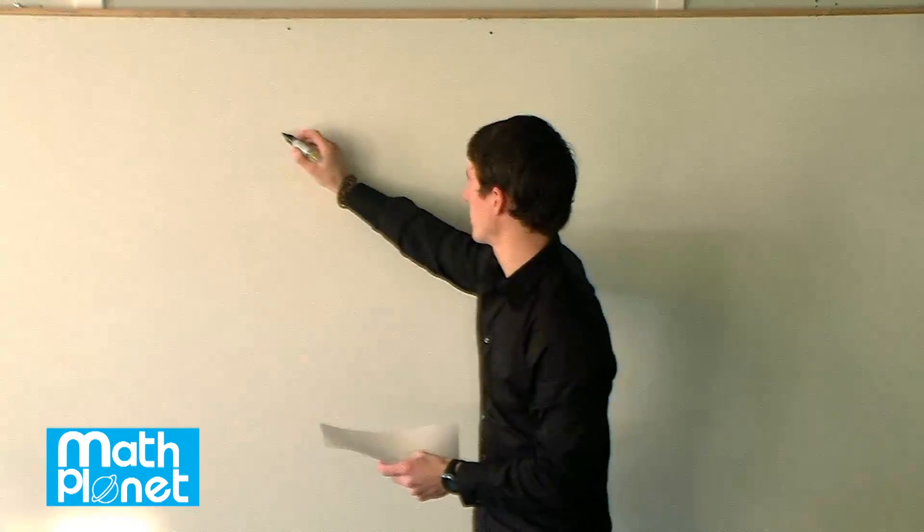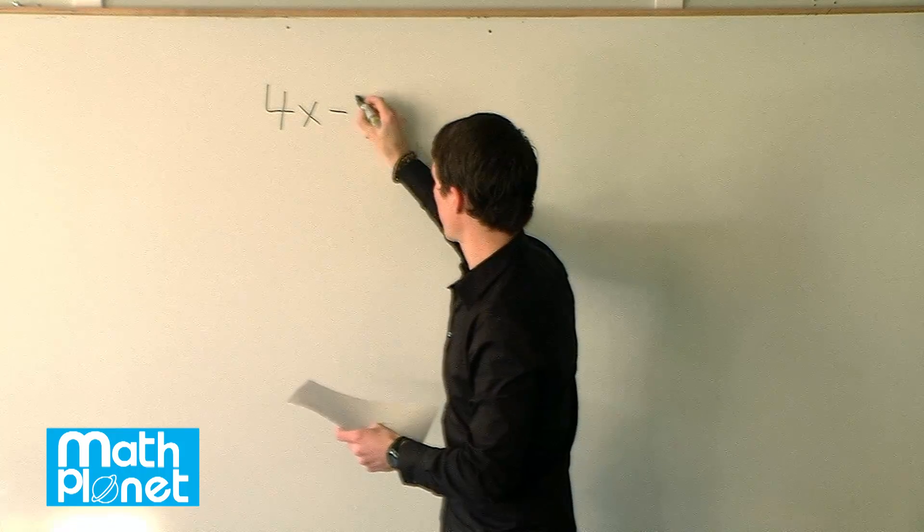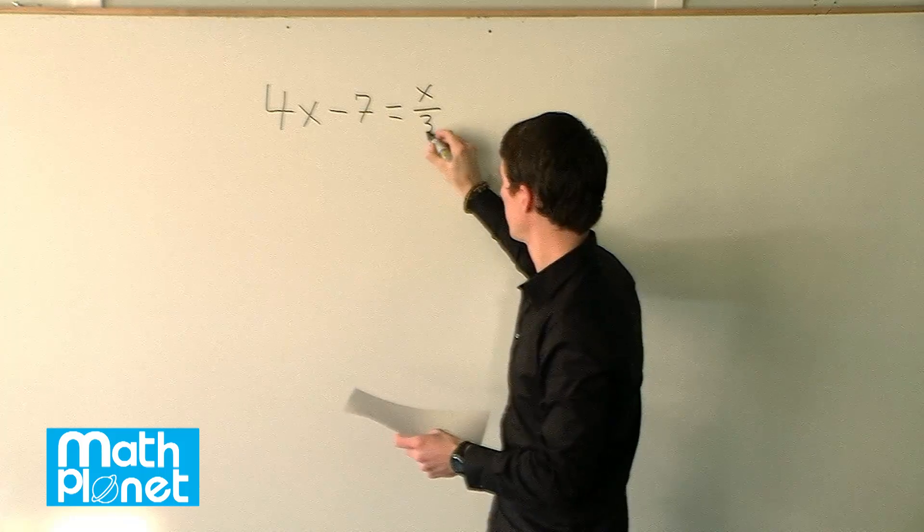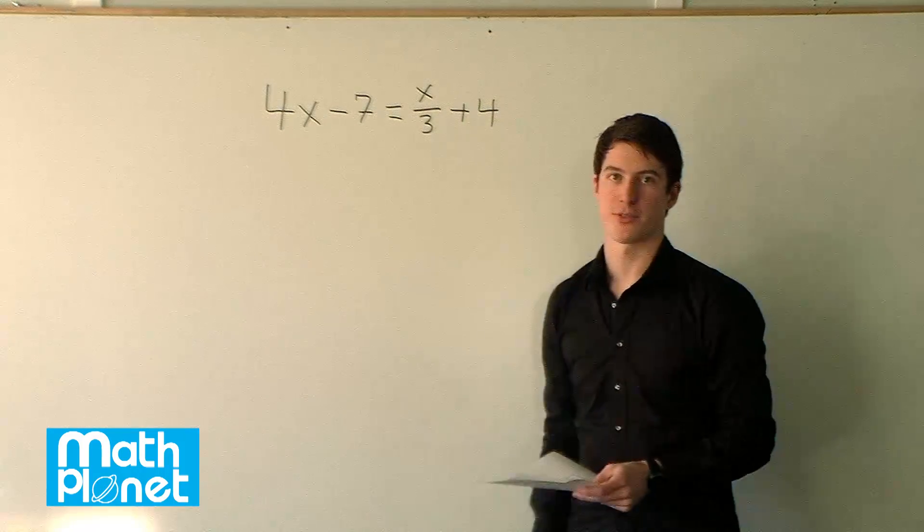Let's solve this algebraic equation: 4x minus 7 equals x over 3 plus 4. We're going to solve this for x.